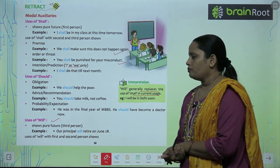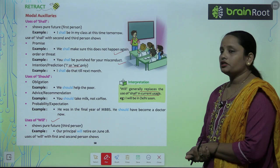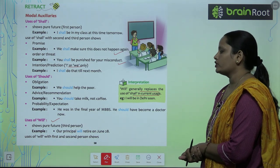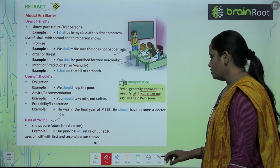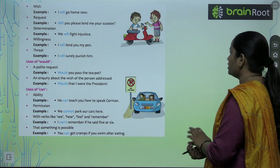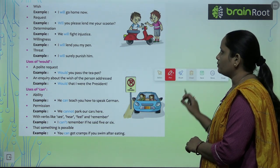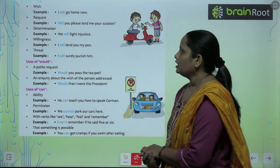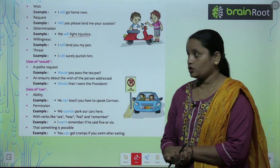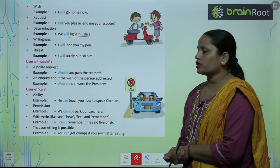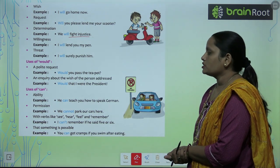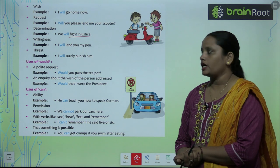Use of will shows pure future with third person — Our principal will retire on 28th June. Use of will with first and second person shows wish: I will go home now. Request: Will you please lend me your scooter? Determination: We will fight injustice. Willingness: I will lend you my pen. Threat: I will surely punish him. The uses of would: it is used for a polite request — Would you pass the teapot? And for an enquiry about the wish of a person — Would that I were the president.